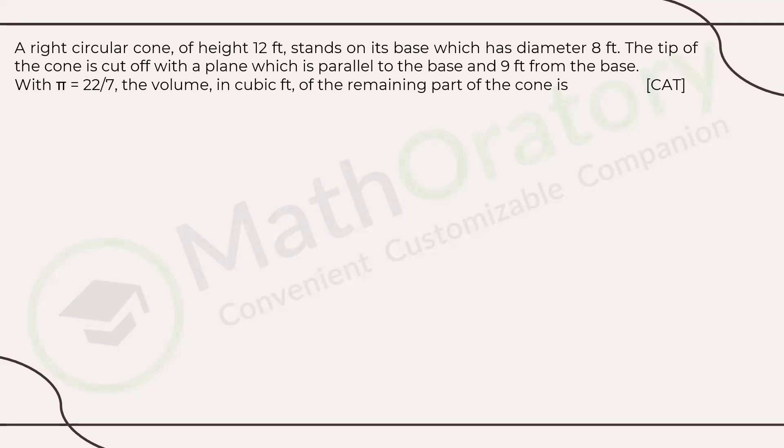So let's just read the question first. We have a right circular cone of height 12 feet standing on its base, which has diameter 8 feet. And the height of the cone is also known to us. The tip of the cone is cut off with a plane which is parallel to the base.